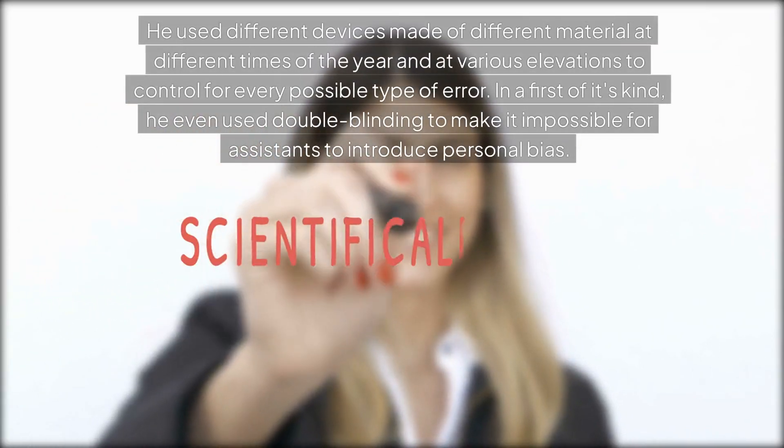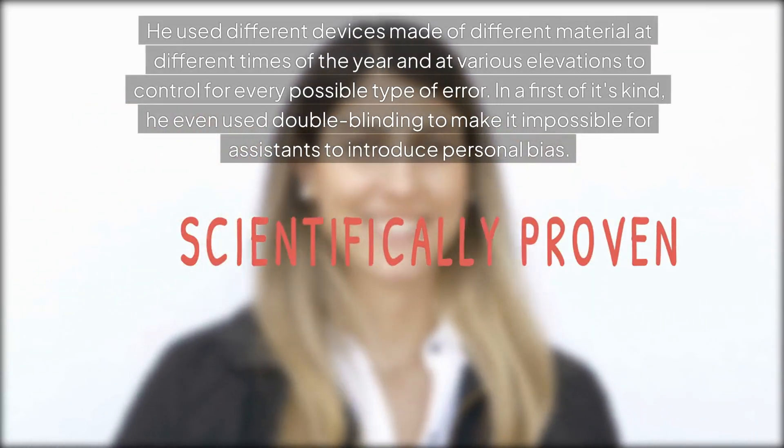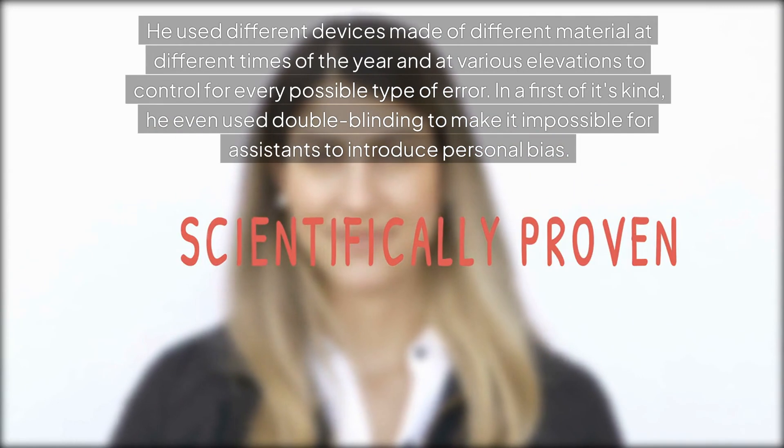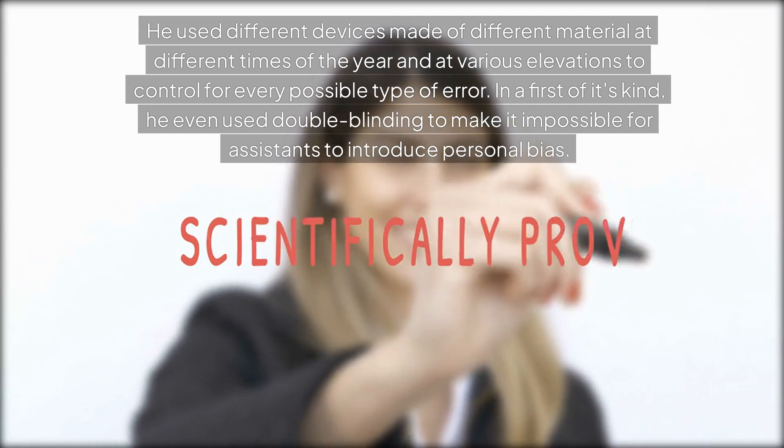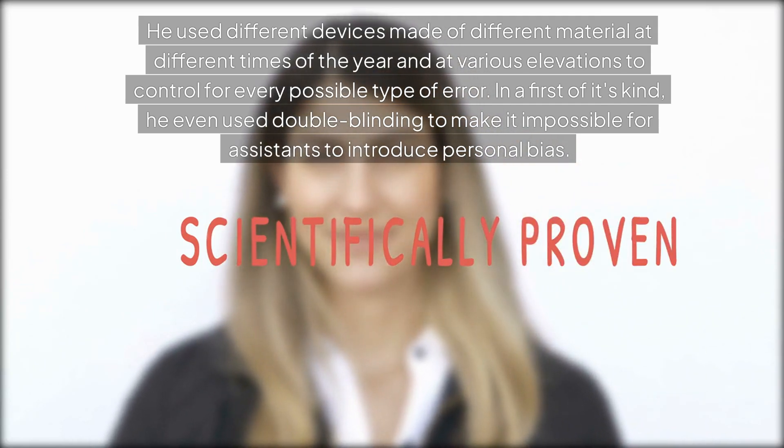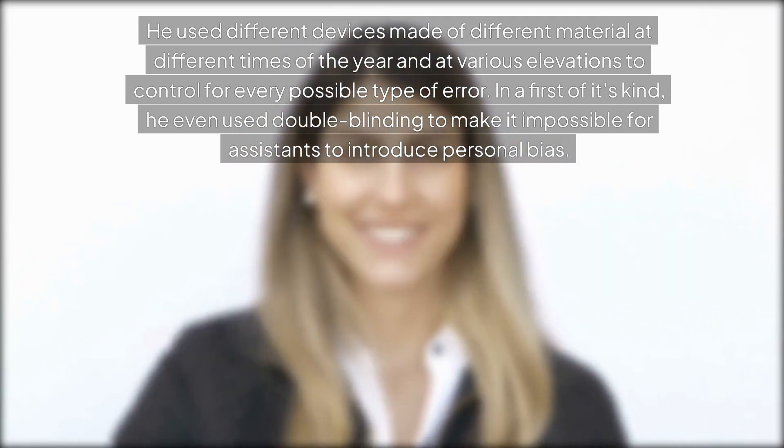He used different devices made of different material at different times of the year and at various elevations to control for every possible type of error. In a first of its kind, he even used double blinding to make it impossible for assistants to introduce personal bias.